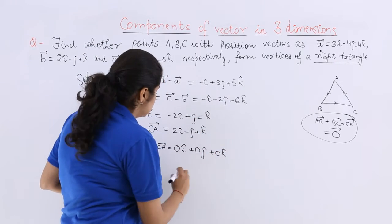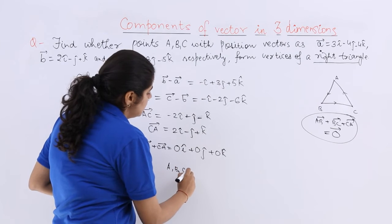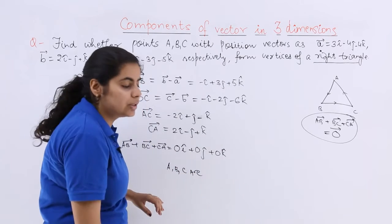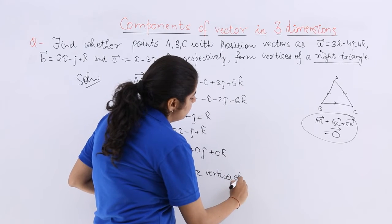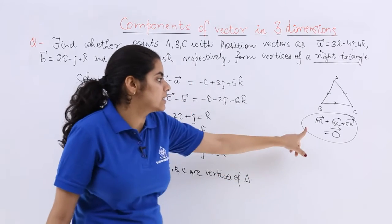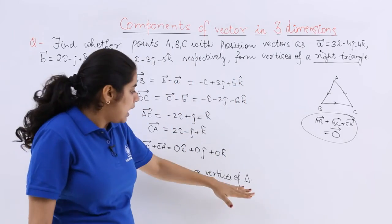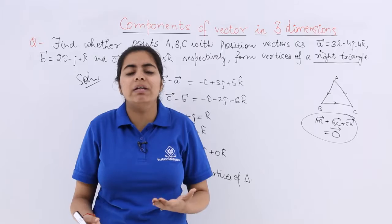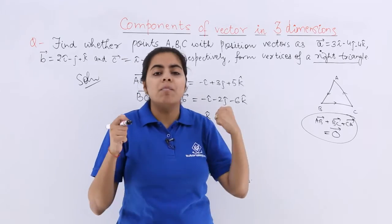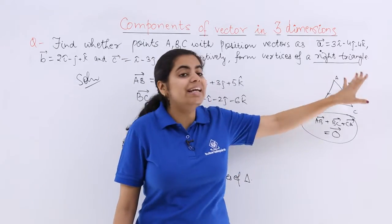That means A, B, C definitely are the vertices of a triangle because I know that they are giving me 0 as this form. Now I have written triangle in short but my question was not only to check whether they are the vertices of triangle but whether they are the vertices of a right triangle.